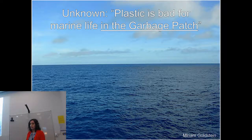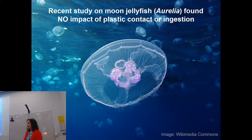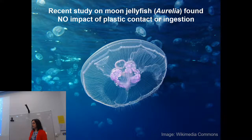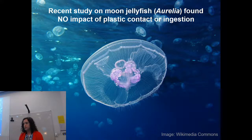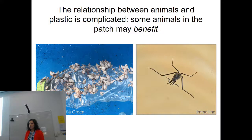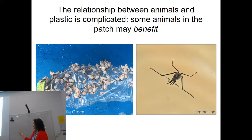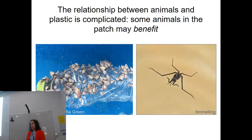A recent study at the jellyfish bloom symposium found that for organisms like moon jellyfish, there was really no impact of ingesting plastic — they just egested it with no measurable impact. This is probably most similar to many neustonic organisms in terms of eating and adjusting plastic. It's also more complicated because some organisms may actually benefit from plastic — plastic serves as habitat for rafting organisms like barnacles attaching to plastic bottles. Halobates, those open-ocean water striders, actually lay eggs on floating debris, giving them more substrate than previously.